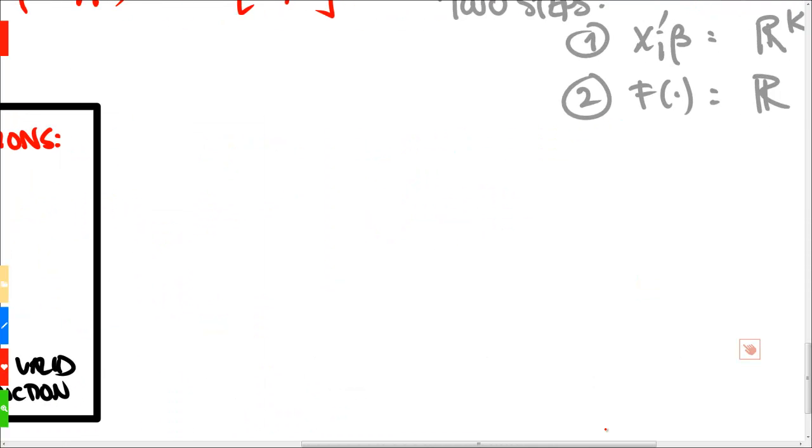We can choose any distribution function as our link function, but two widely used examples of this are the so-called logit and probit models.